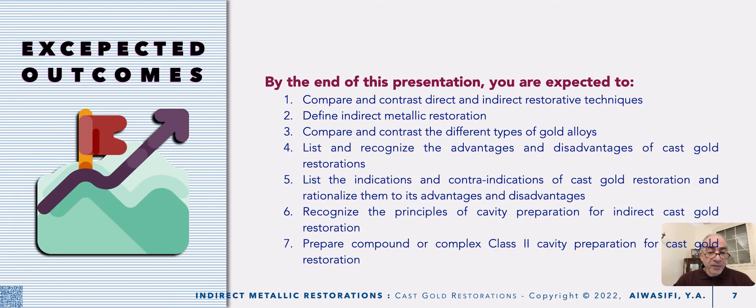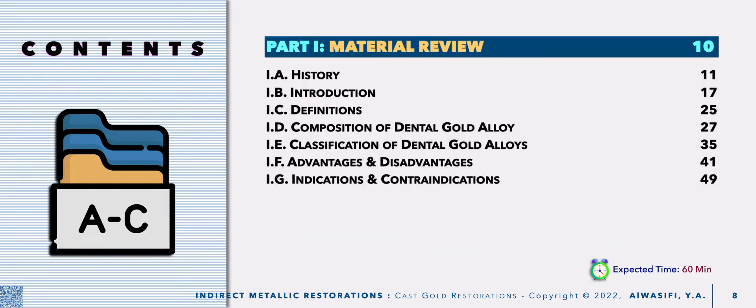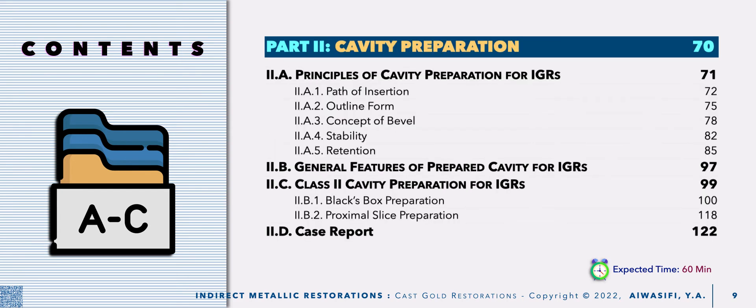Today we will discuss the preparation of compound or complex class 2 preparation for cast gold restoration. In the previous episodes, as an overview of what we have discussed: in part 1 we discussed the material review, including history of development and introduction, definitions, composition and classification of dental gold alloys, and their advantages and disadvantages, and how to assign indications and contraindications based on the material advantages and disadvantages.